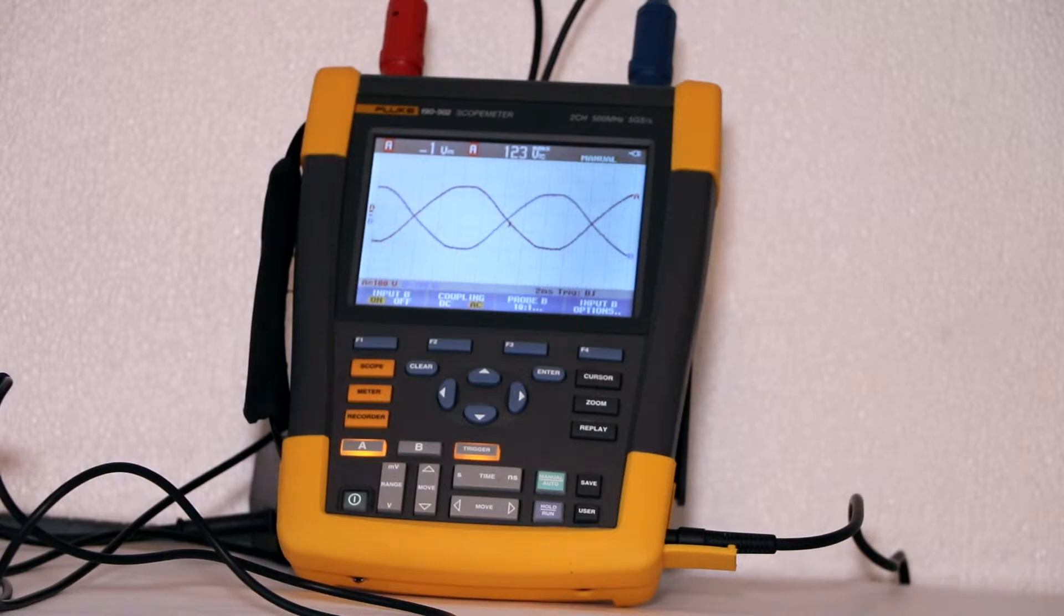An easy way to do this is to connect the probe tip of channel A to the hot or black wire and the ground return lead of channel A to the neutral or white wire.